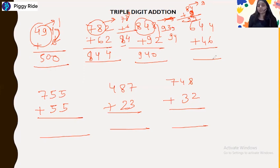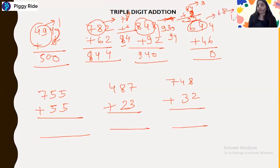For 644 plus 46: the end digit is 0 and 64 plus 4 gives 68, which increases by 1 because there is a carry, giving 690. So the answer is 690.